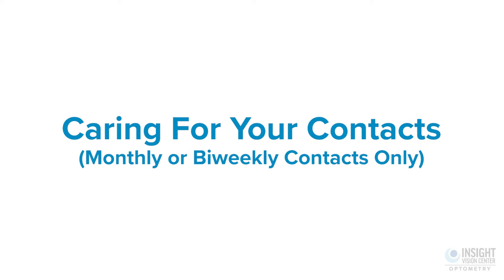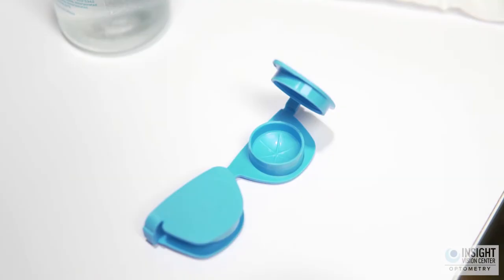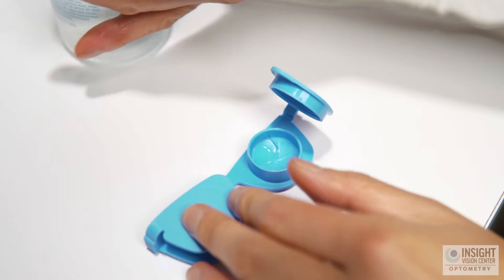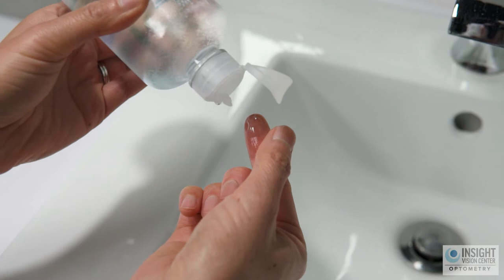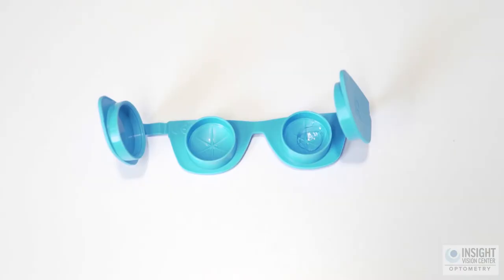Caring for your contacts for monthly or bi-weekly contacts only. Step 6: After removing your contact lenses, always place them in the case and fully submerge them in multipurpose solution. Step 7: Always rinse them with multipurpose solution and give a gentle rub to the contacts to remove any deposits.